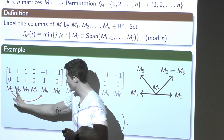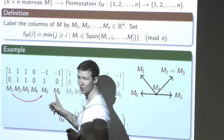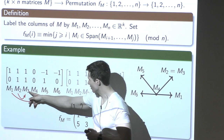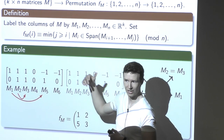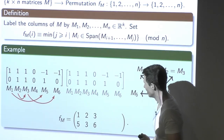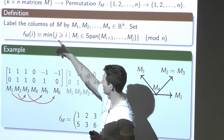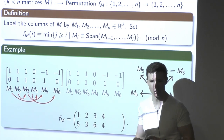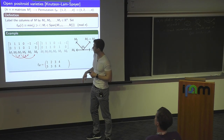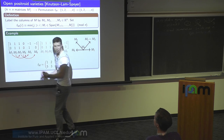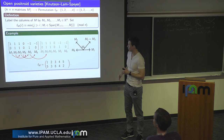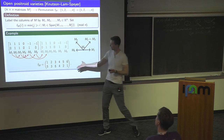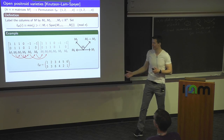Continuing cyclically: column two scans to the right, and since two and three are parallel, two goes to three. Three goes to six. Four: if a column is zero, it goes to itself by definition. Five goes to two, and six goes to one. It's a surprising fact that you always get a permutation from this construction. The important example: if my matrix is completely generic (no zero columns, no parallel columns), then the permutation sends i to i+k mod N. I'll denote this permutation by f_{k,N} — the most generic permutation.